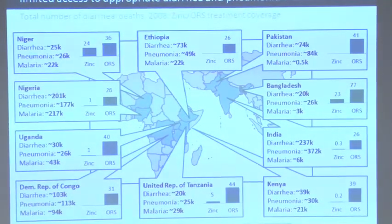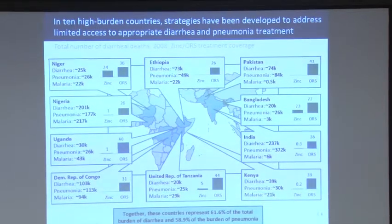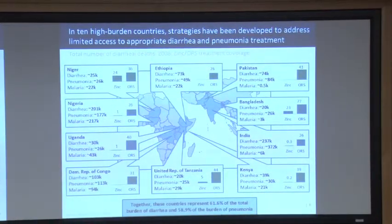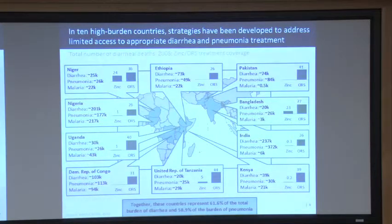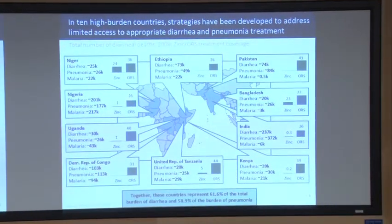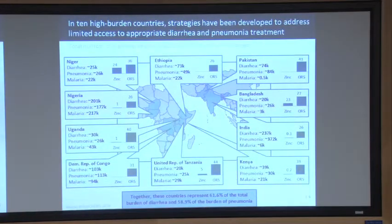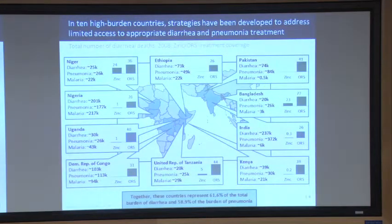These are the ten countries with the largest number of diarrhea deaths. In Nigeria, over 200,000 kids are dying of diarrhea, but the oral rehydration solution coverage of diarrhea episodes treated is only 26%. Zinc is a relatively new discovery — giving a short course of zinc actually reduces the duration of diarrhea and substantially reduces diarrhea-related mortality. It's something very cheap that should be rolled out. Yet the coverage levels of zinc are starting from a very low base and have not really taken off in many of these countries, despite many studies showing its efficacy.